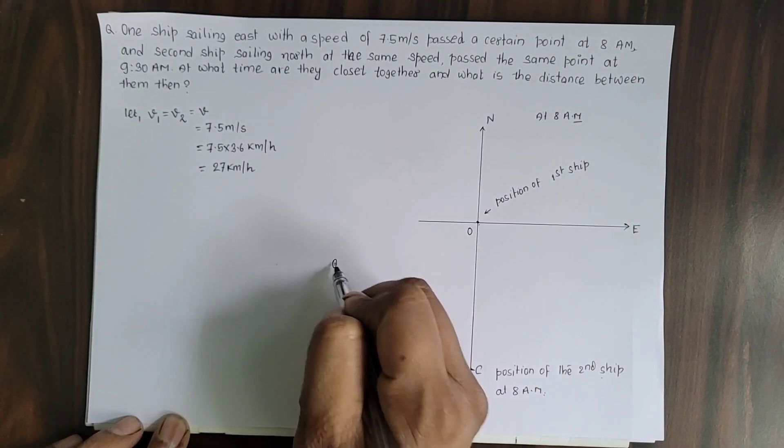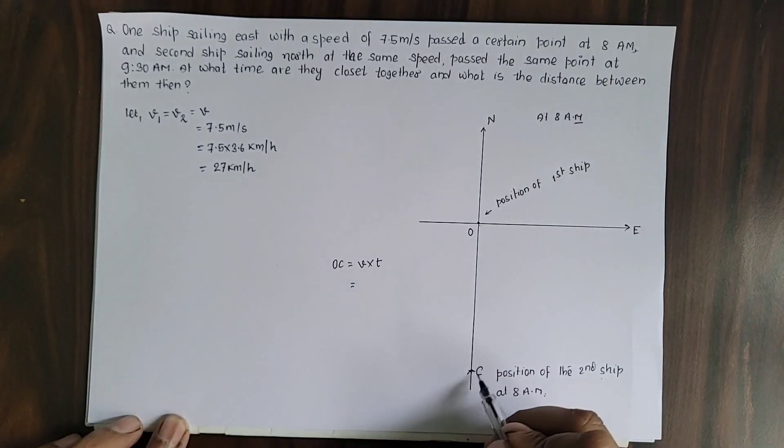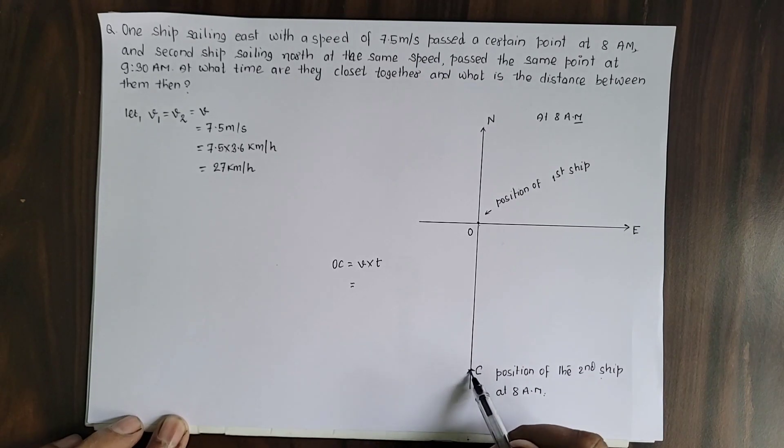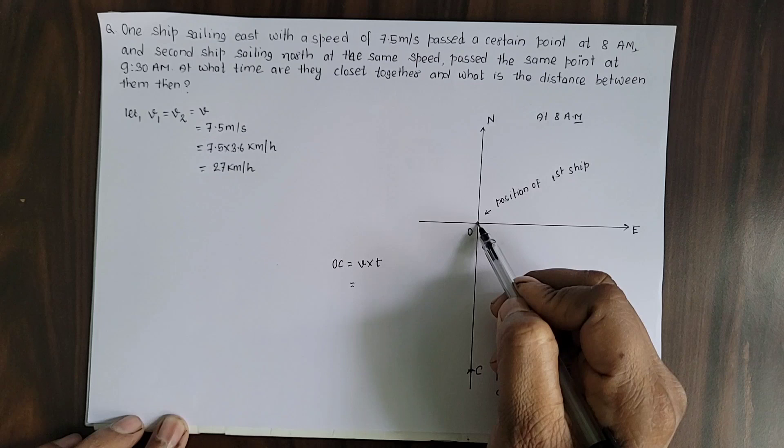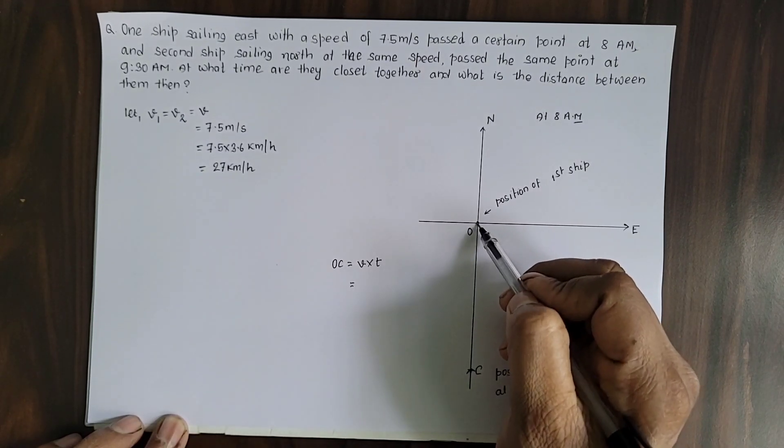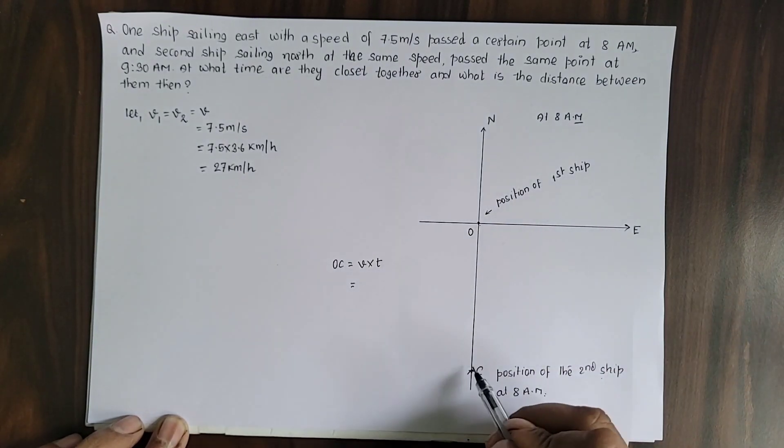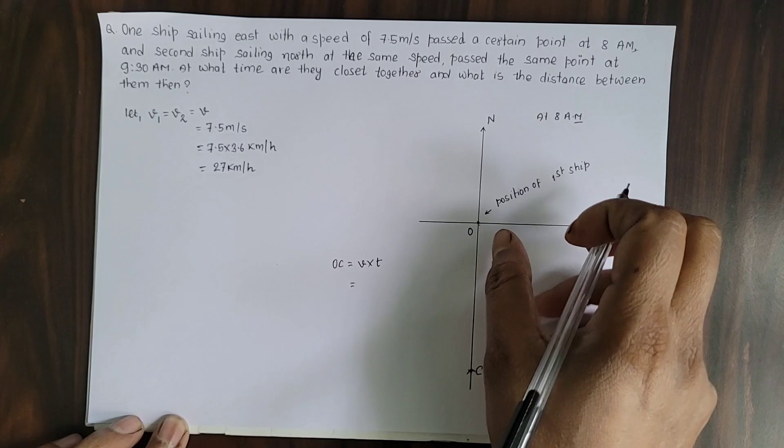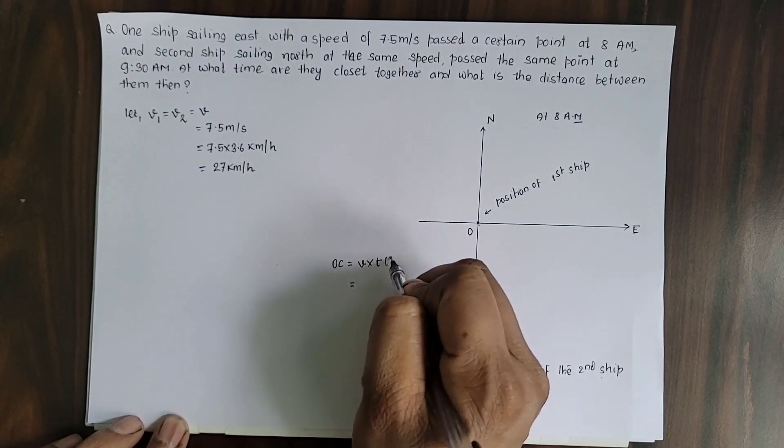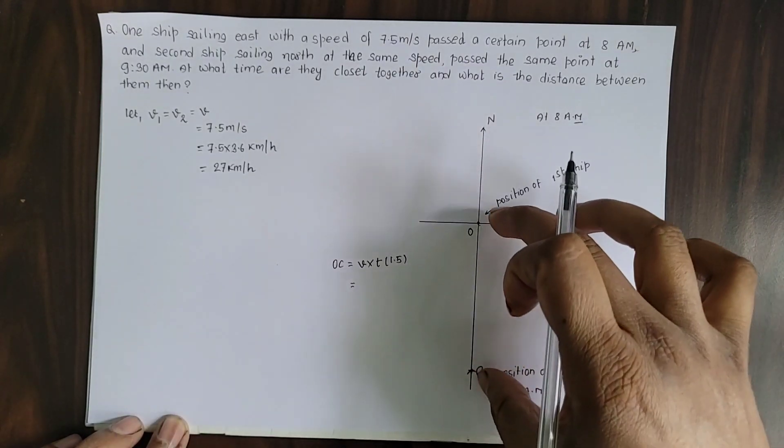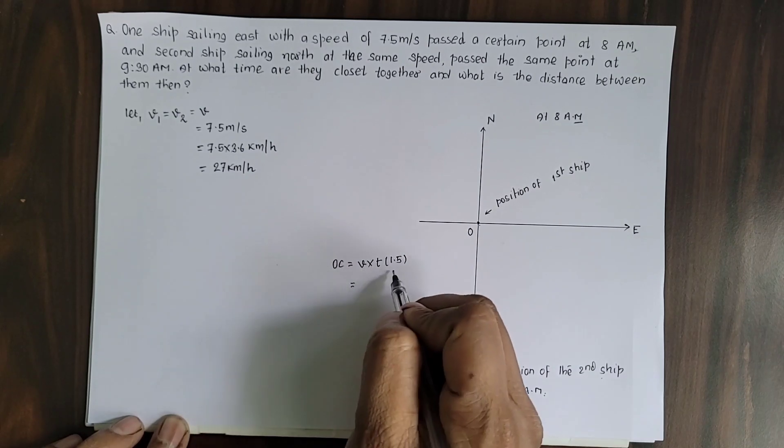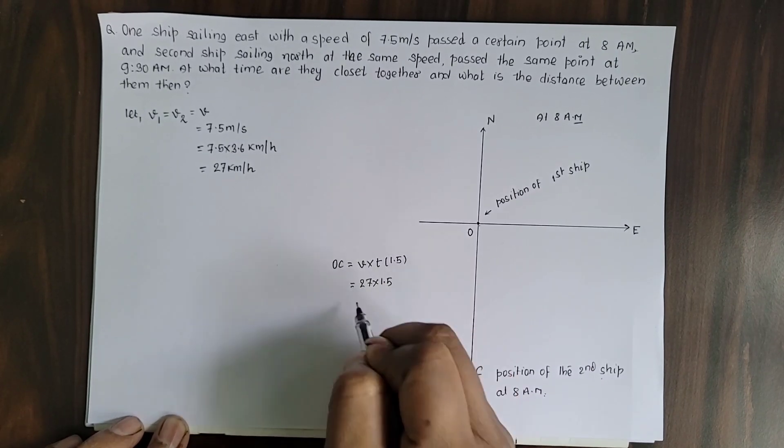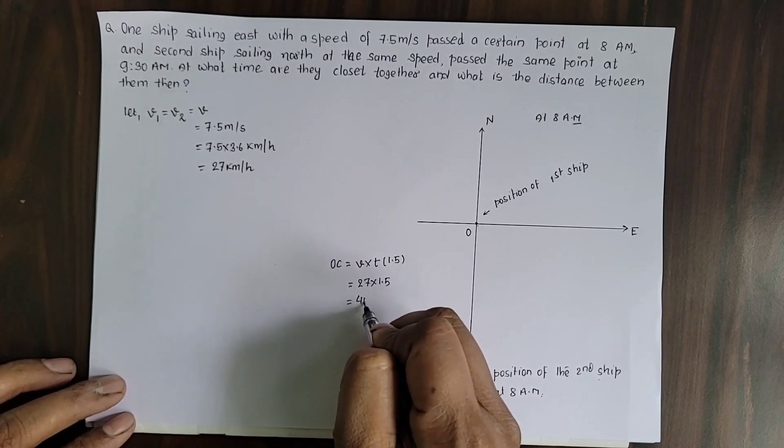To find the distance OC at 8 AM, we can use the formula: OC equals velocity times time. The second ship needs to reach point O, so the time taken is from 8 AM to 9:30 AM, which is 1 hour plus 30 minutes, meaning 1.5 hours. The total distance OC equals v times t, which is 27 times 1.5, giving us 40.5 kilometers.